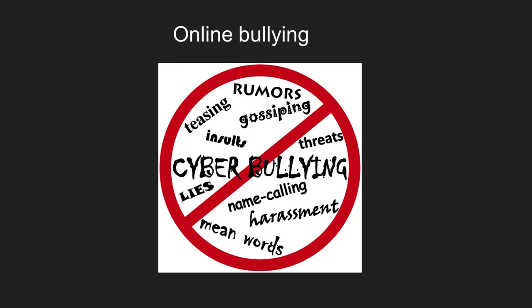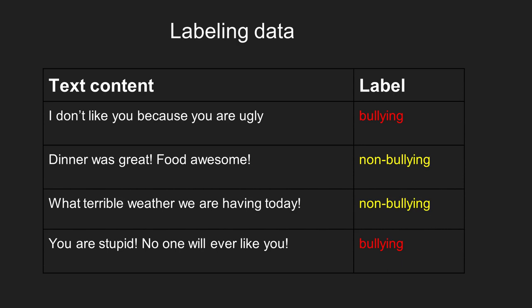Due to the vast amount of online data generated from various activities like messaging, social media interactions, and online forums, it is challenging for humans to recognize bullying and respond to it quickly. If we want to teach a computer to recognize these contents, we can develop NLP algorithms. First, a human attaches a label to each text content as either bullying content or non-bullying content. In our table here, we have some examples in each category.